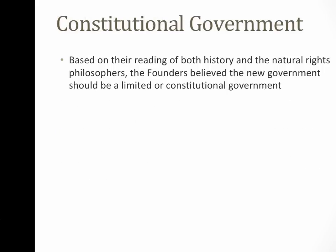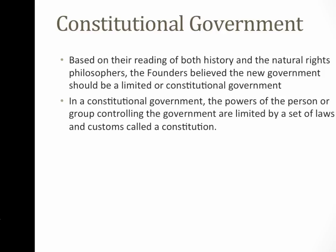Constitutional government, on the other hand — when the founding fathers created this government, it was based on their readings of both history and natural rights philosophers. The founders believed that this new government should be a limited or constitutional government. In this form of government, the powers of the person or group controlling the government are limited by a set of laws and customs called a constitution. In our government, there are laws that rulers have to follow, there is a written constitution that outlines the powers of all branches of government, how the state should interact, the process for making amendments, and how conflicts between state and national government are resolved. Everything is written down in this constitution.